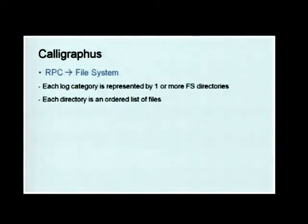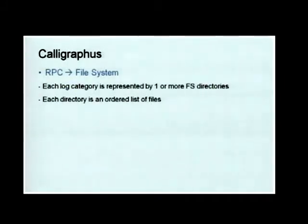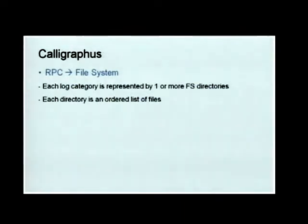Let's go into more details on Calligraphers. What Calligraphers does is basically get the data from RPC, which gets pushed from the web tier, and then write that into a file system. In the Calligraphers world, each log category is represented by one or more file system directories, and each directory is basically an ordered list of files. This is the simplest way of representing a data stream on a file system.